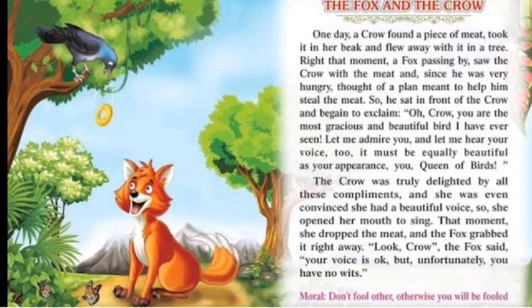So the fox sat in front of the crow and began to flatter her, saying: 'Oh crow, you are the most gracious and beautiful bird I have ever seen.' The sly fox sat just before the crow and said that she was the most benevolent and beautiful bird he had ever seen. He added: 'Let me admire you, and let me hear your voice too.' The fox flattered her further, saying he wanted to hear her sweet voice.